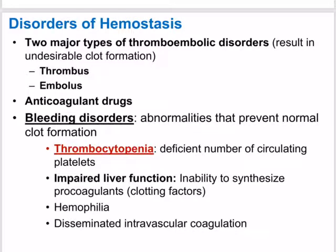Sometimes people who are at risk for developing embolisms might be prescribed injectable heparin or they might take a blood thinner such as aspirin. The risk factors associated with a predisposition to form blood clots include atherosclerosis, inflammation, and slow-flowing blood. Anticoagulant drugs — drugs that help prevent blood clotting — include aspirin, heparin, and warfarin, and they're used clinically to prevent undesirable clotting.